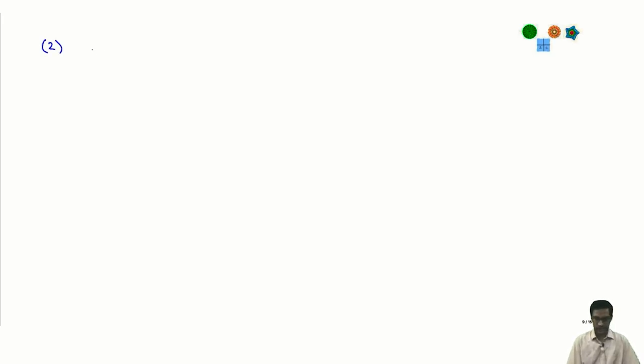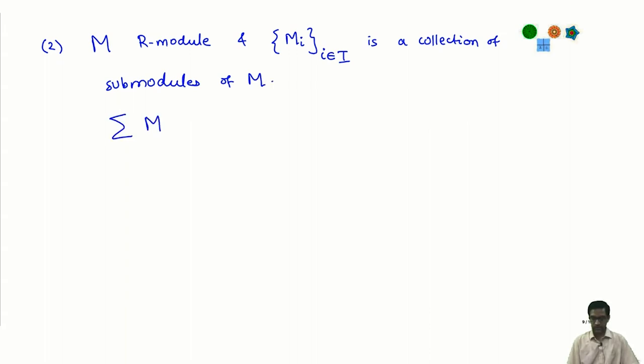The second general construction is suppose I give you m which is an r module and suppose I give you a collection of submodules. m i i belongs to i, this is some indexing set, a finite or infinite collection of submodules of m. Then we can form what is called their sum. This is called the sum of m i i belongs to i. This is defined as follows: I take the union of all the m i s.